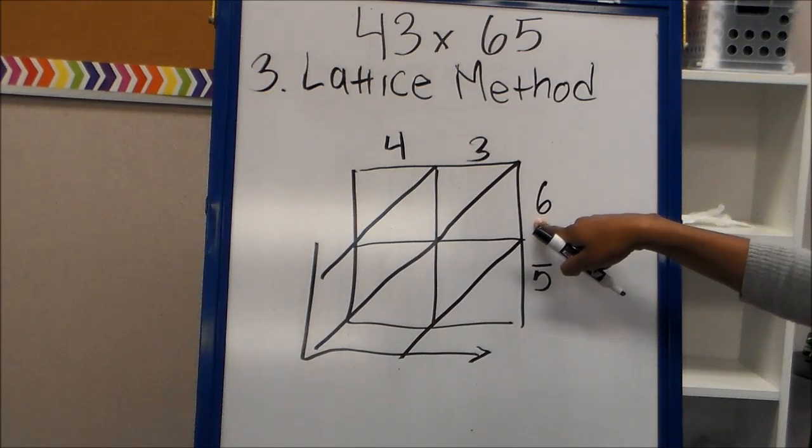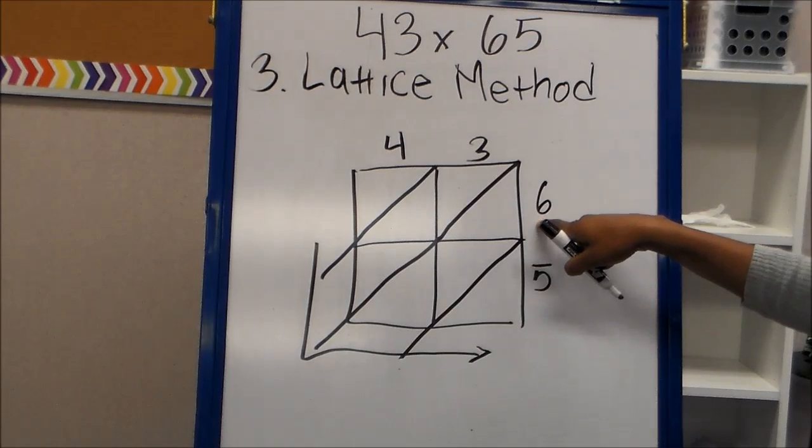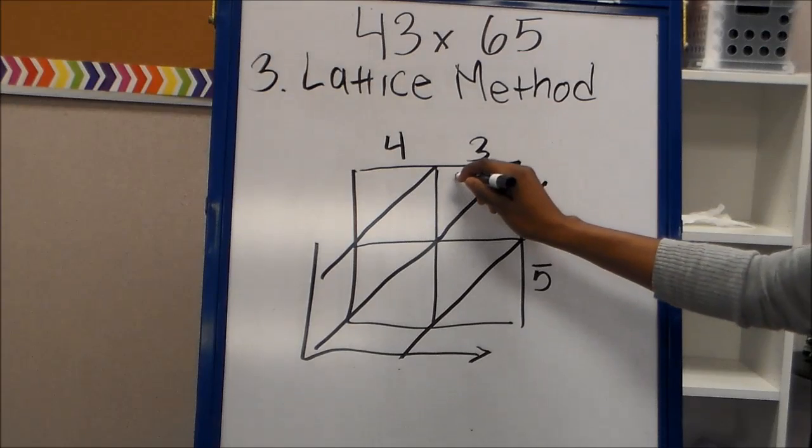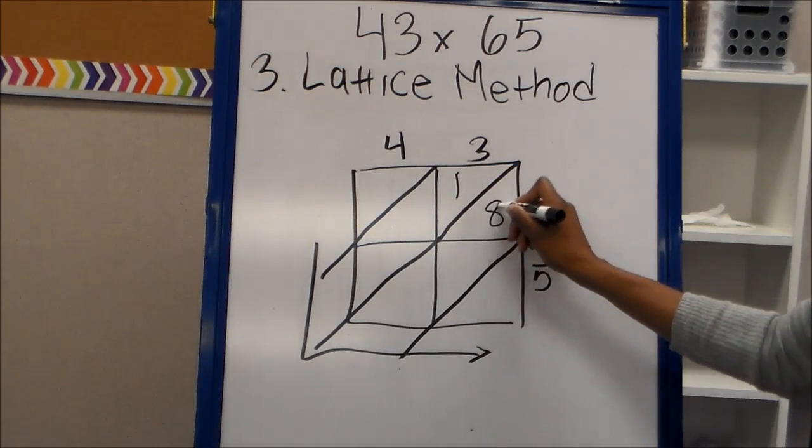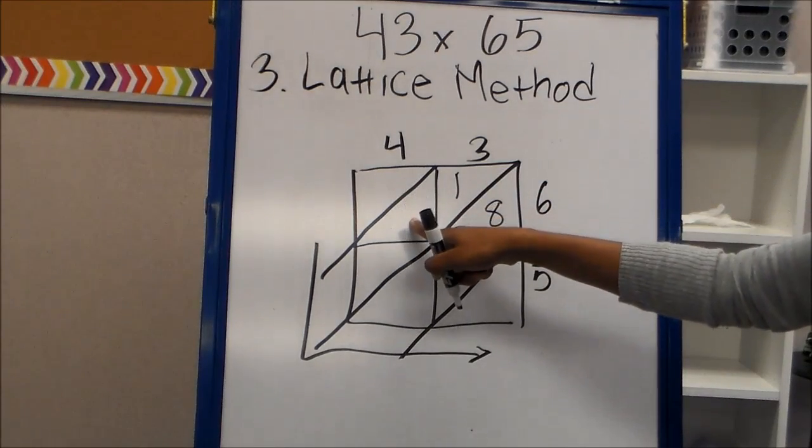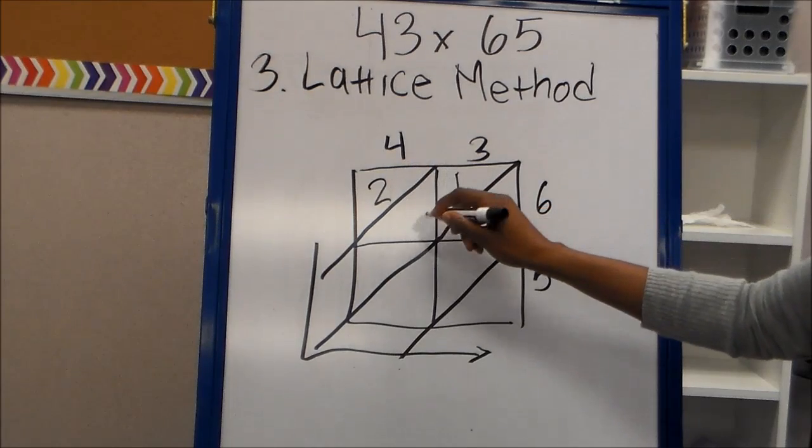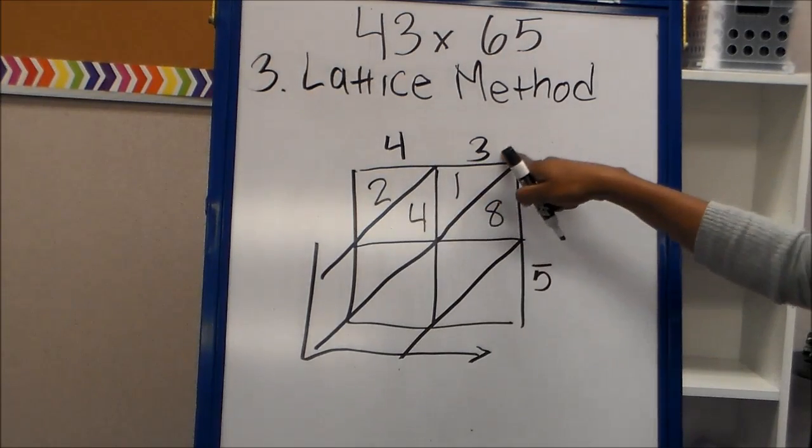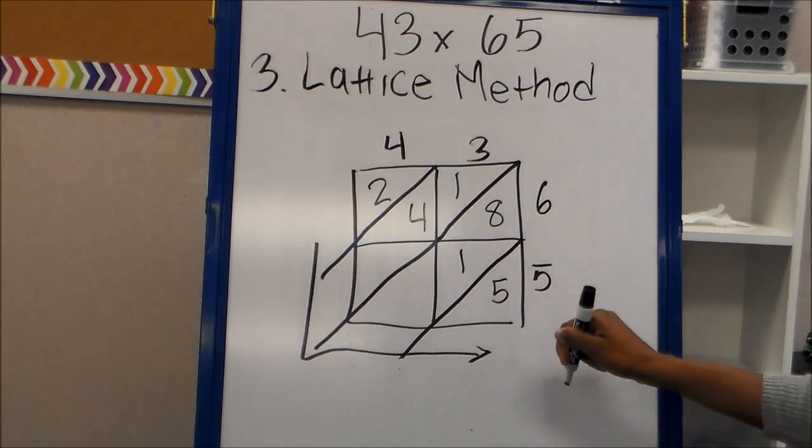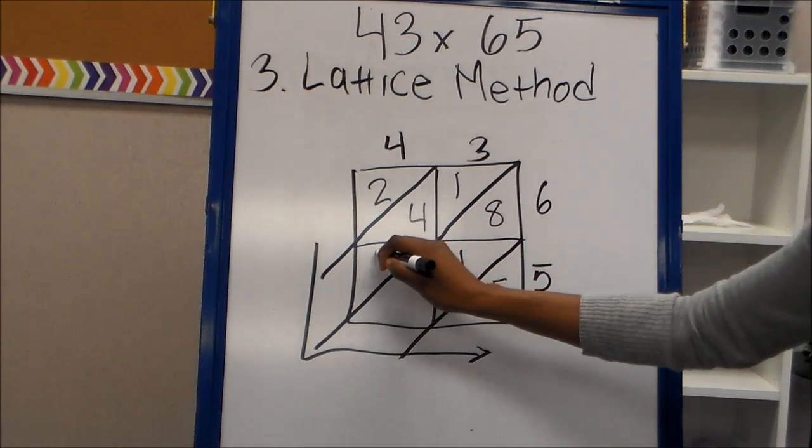Now I'm going to multiply. Just like the area model method, I'm going to multiply the numbers on the side by the numbers on the top. Six times three gives me 18. I put my tens place on top and my ones place on the bottom. So one and then eight. Six times four gives me 24. I put my tens place on top, ones place on the bottom. Five times three gives me 15. Tens place on top, ones place on the bottom. Five times four gives me 20.